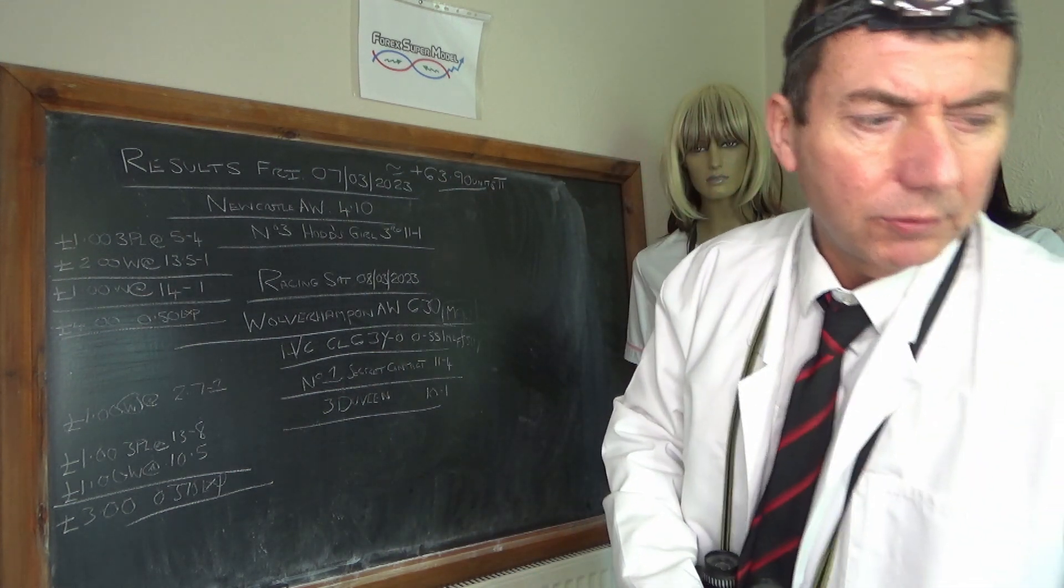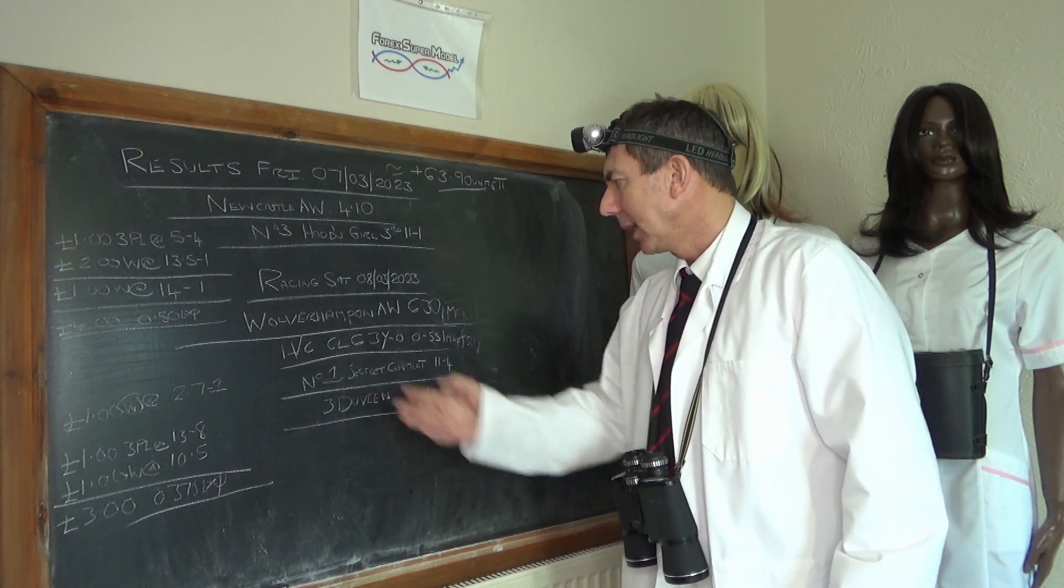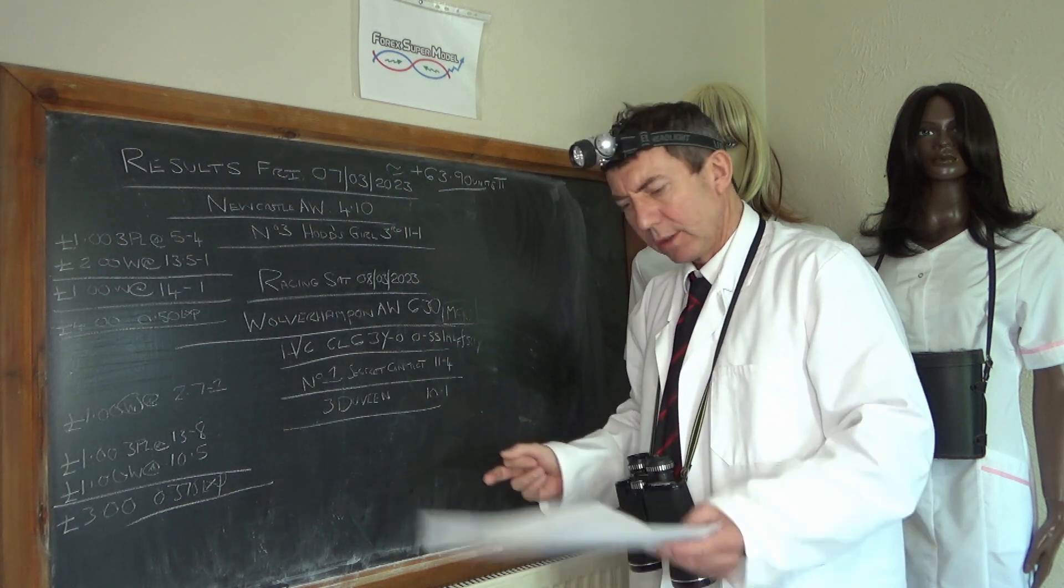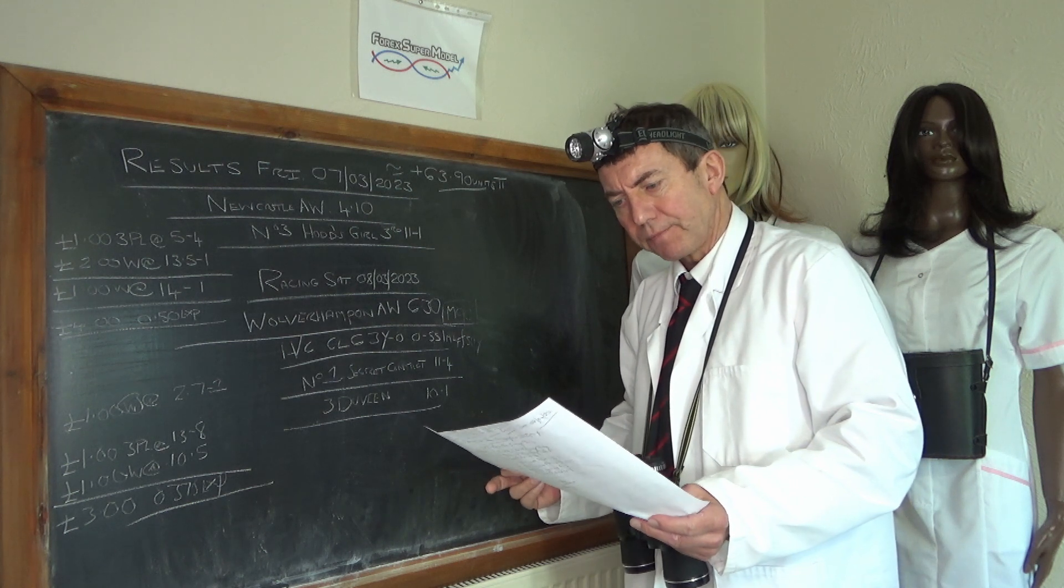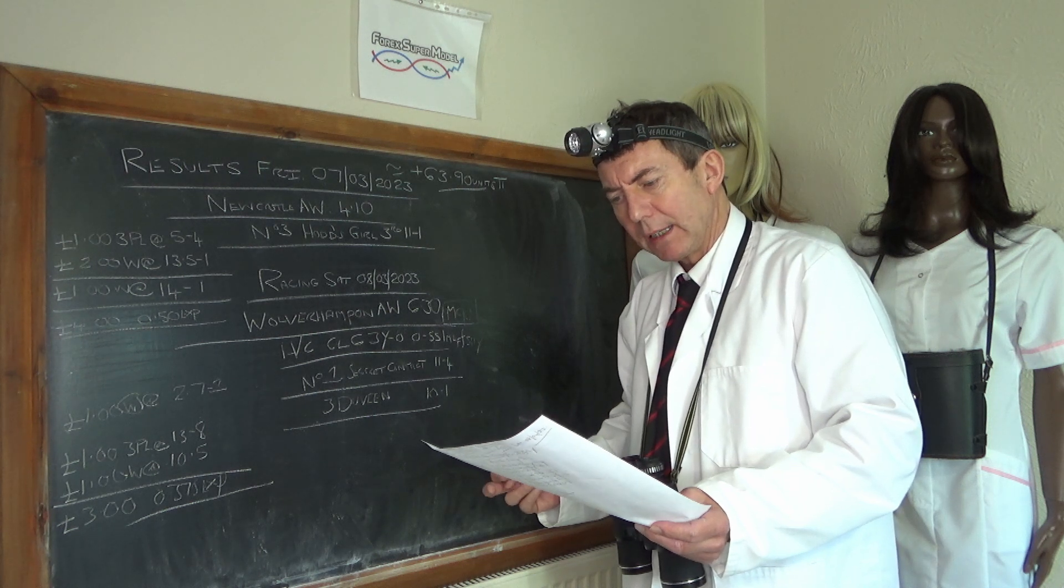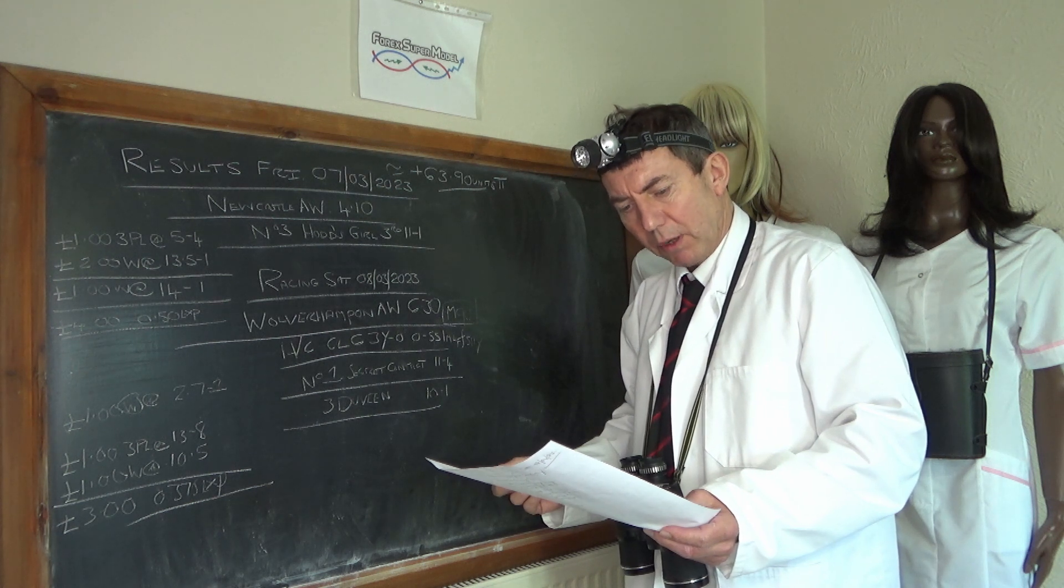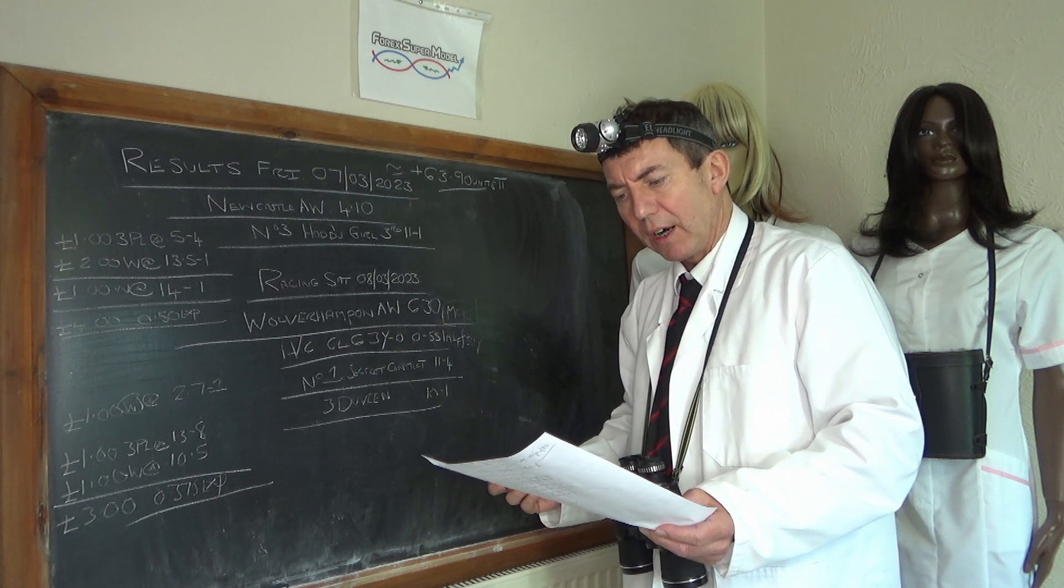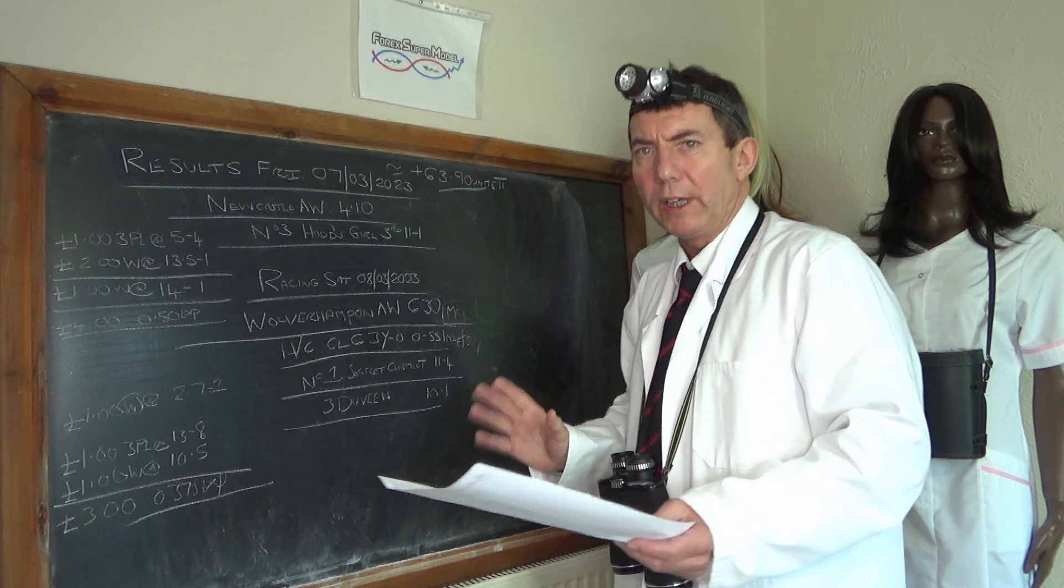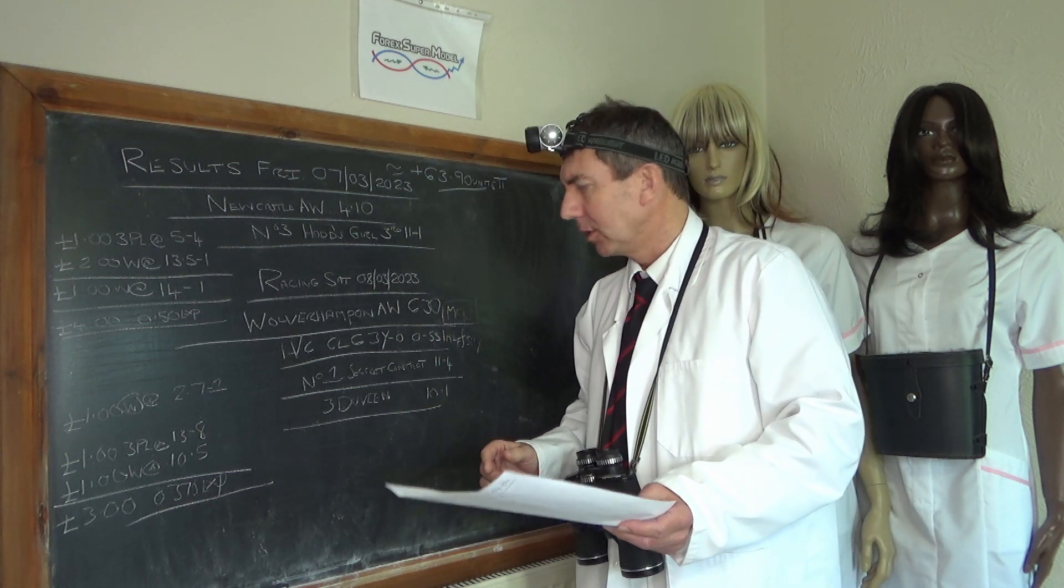Right, today, what have we got? We've got Wolverhampton on the all-weather at 6:30. Model 90. We've got a handicap, class six, three year old, 0-55, one mile four. There's six in the race. The likely favourite is Think Champagne, which has got a link through with Margaret Beaufort, which was number five. That's sort of weak, weak races, they're weak races and relatively poor performances, so we're going to give those the chop.